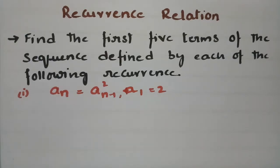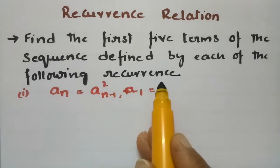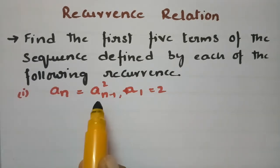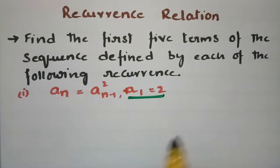Today's video is on recurrence relations. Here is the problem: we have to find the first five terms of the sequence defined by each of the following. The first sequence is a_n = (a_{n-1})², with initial condition a_1 = 2.